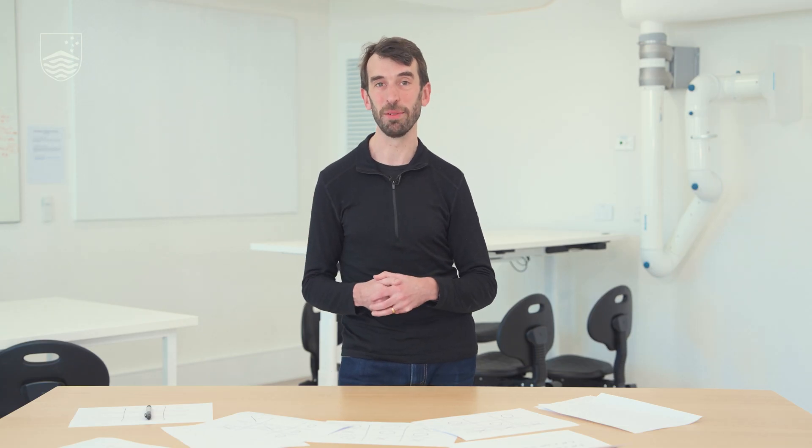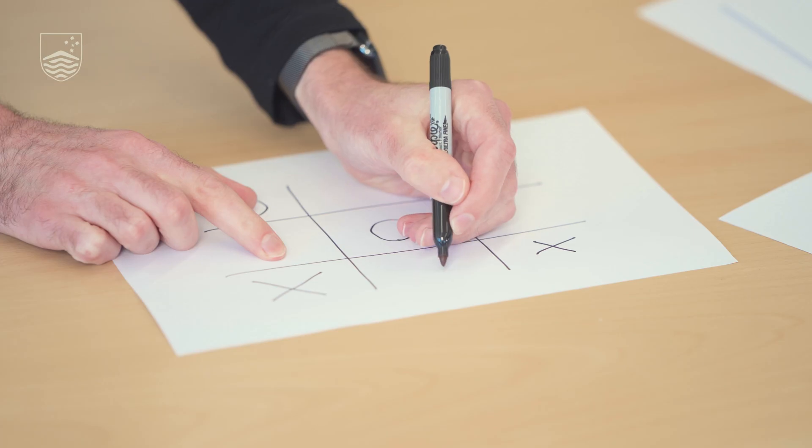Today we're going to be doing an activity called Unplugged AI with tic-tac-toe. In this activity we're going to learn a little bit about how an artificial intelligence system on a computer might learn how to play games, using the simple game of tic-tac-toe or noughts and crosses.